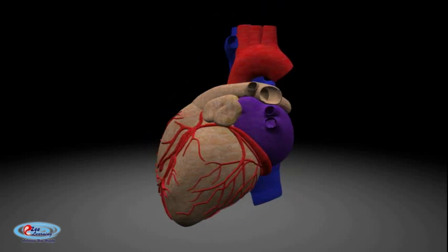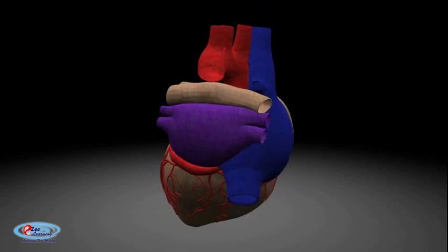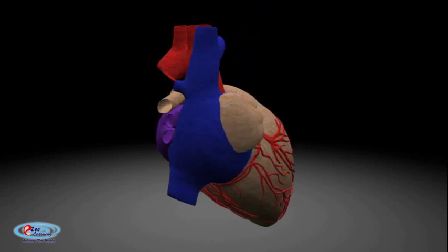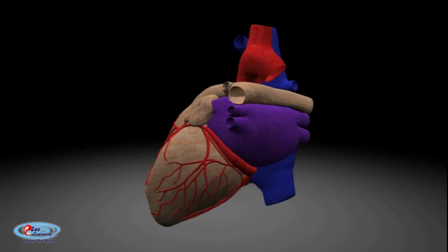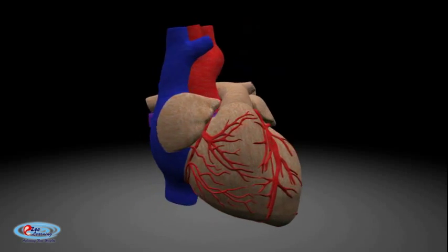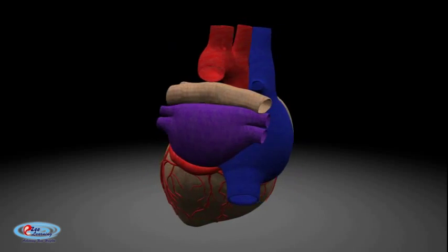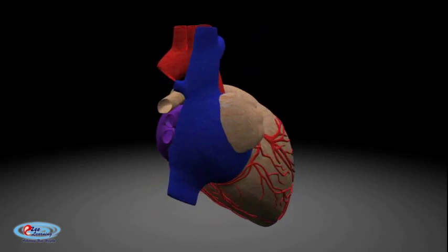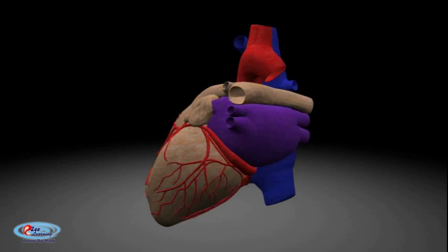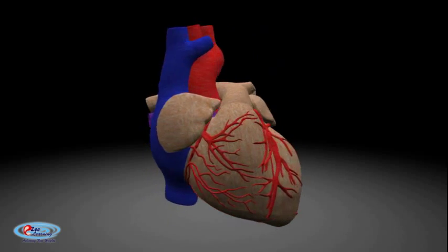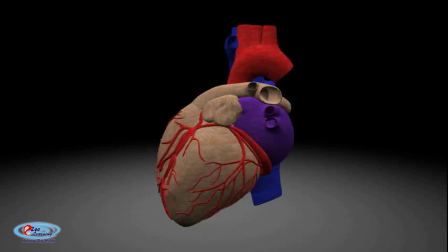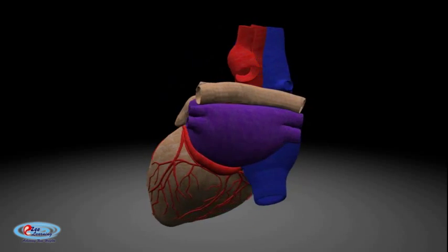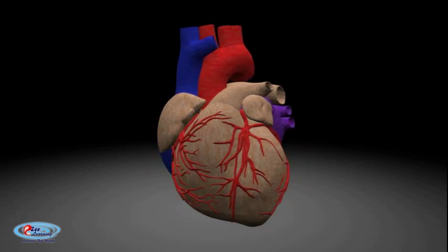In humans, the heart is roughly the size of a large fist, and weighs between 250 and 350 grams. It has four chambers: two upper chambers, the atria, and two lower ones, the ventricles. A wall of muscle called the septum separates the two sides of the heart. The heart circulates blood through two pathways: the pulmonary circuit and the systemic circuit.